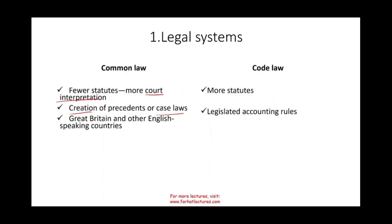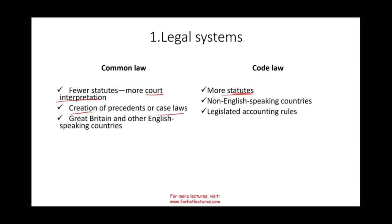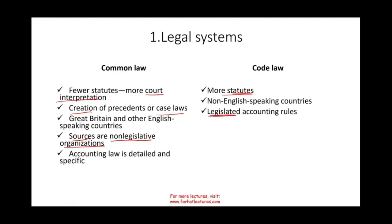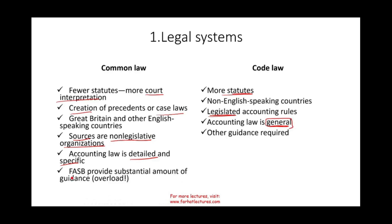Code law is a little different. In code law, you have more statutes — the laws are written down — and it's usually non-English-speaking countries. A political body legislates the accounting rules. In the US, the sources of accounting rules are non-legislative, private organizations like FASB. In common law countries, accounting law is detailed and specific — sometimes confusingly so. In code law countries, accounting law is very general; they give you the general rule and you follow it, requiring other guidance.